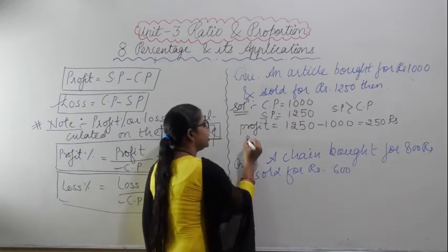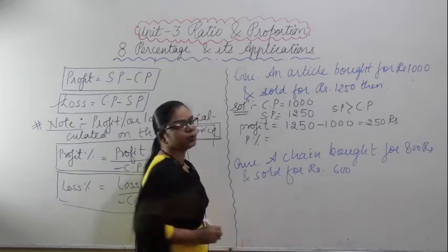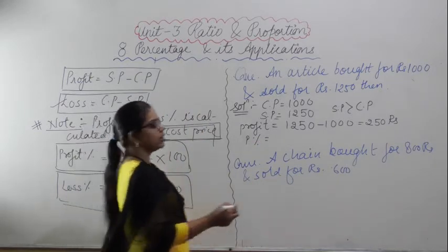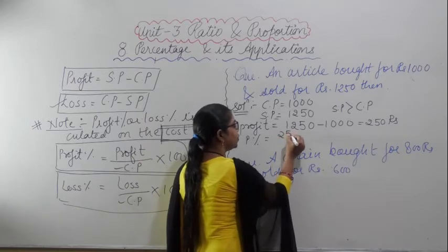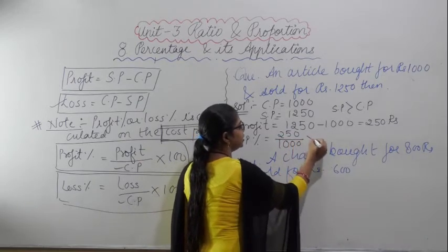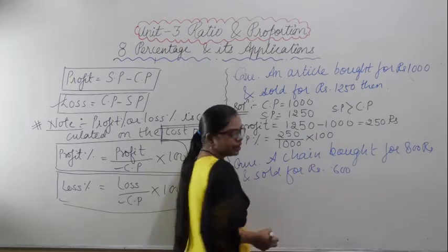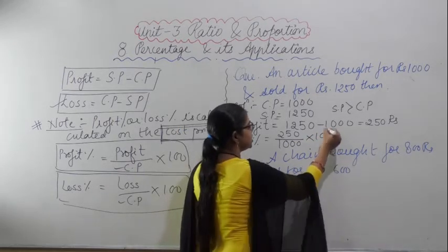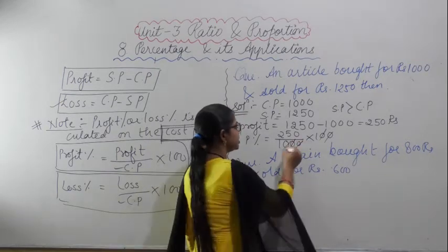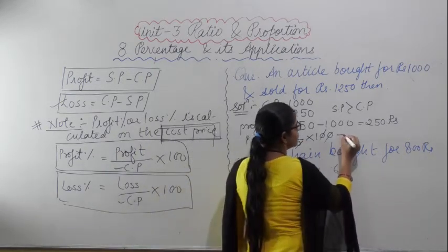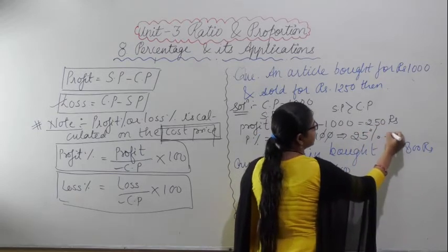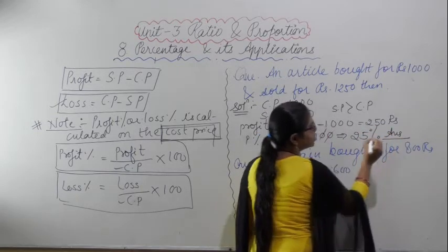Now to find profit percent: profit upon cost price into 100, which is 250 upon 1000 into 100. The zeros cancel out, giving 250 by 10 — so the profit percent is 25%. This is the answer.